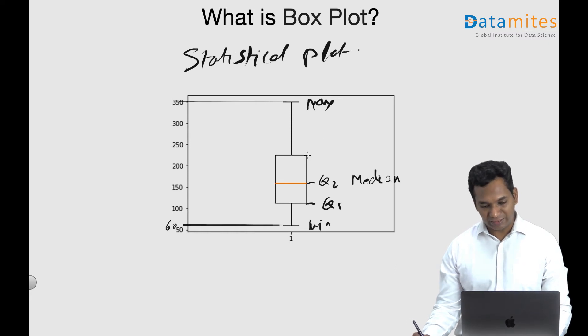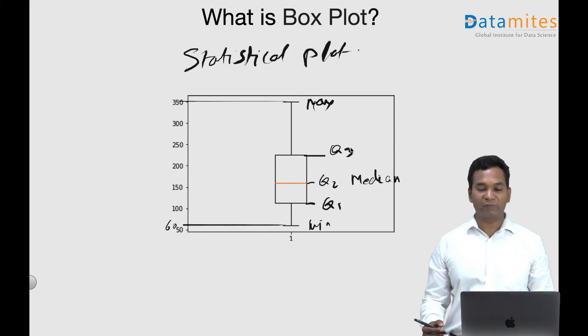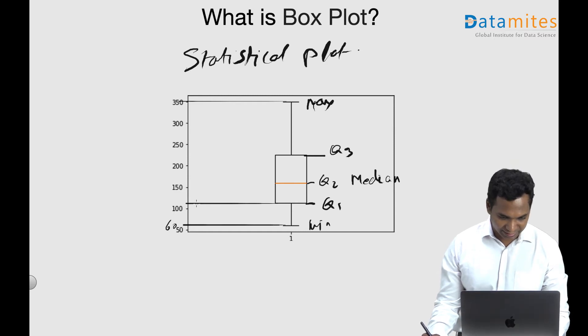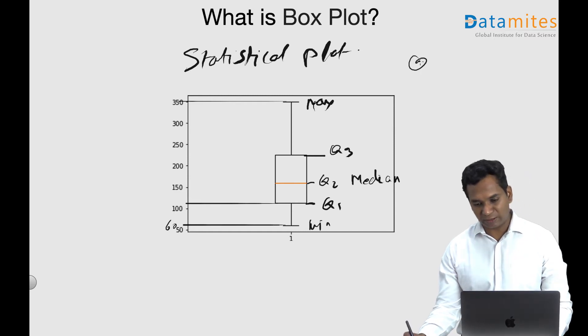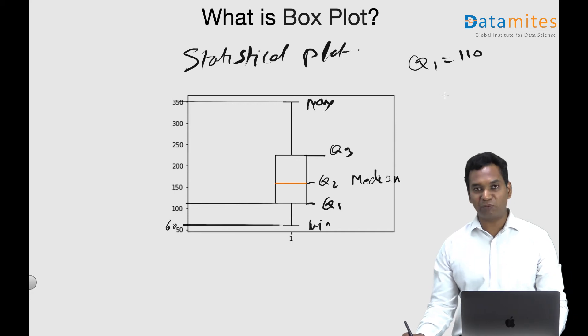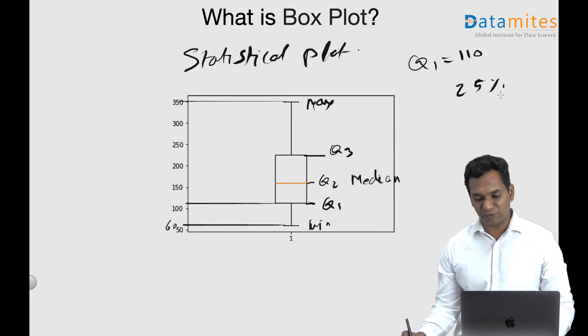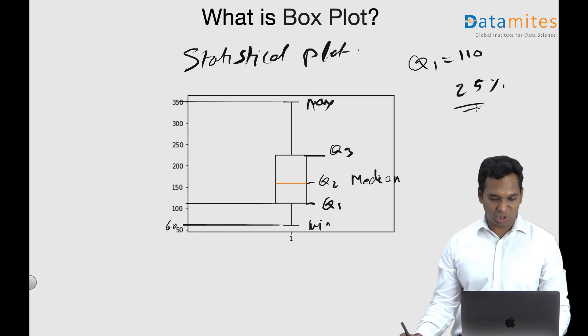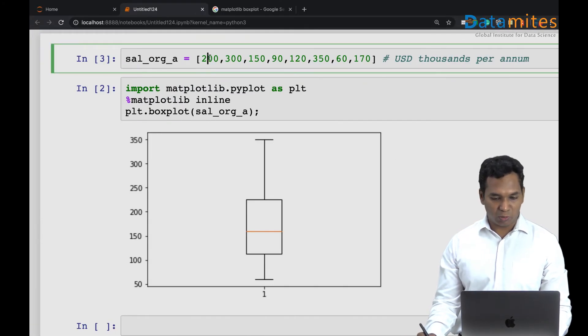And this is your quartile 3. So what does these quartiles actually mean? For example, let's say quartile 1 is around 110. So Q1 equals 110. What does it mean? It means about 25 percent of the people in your organization have a salary less than or equal to 110. So in our case, how many people we have in our distribution? One, two, three, four, five, six, seven, eight.